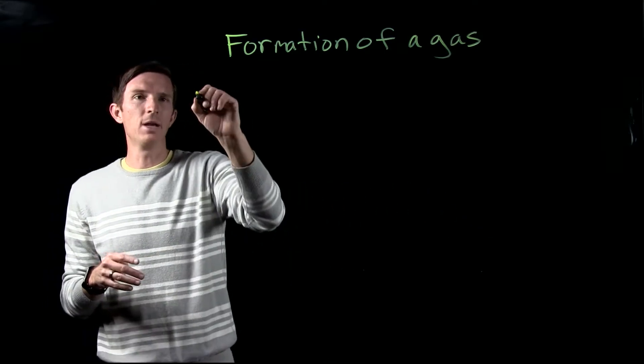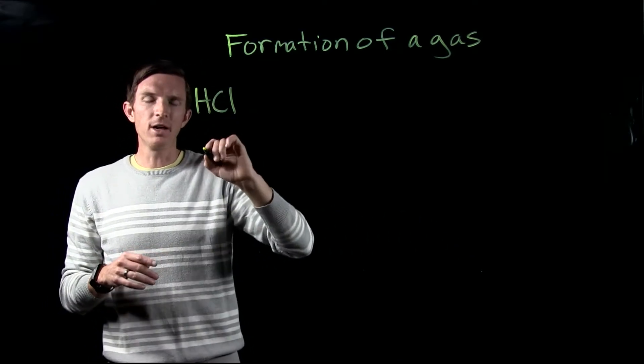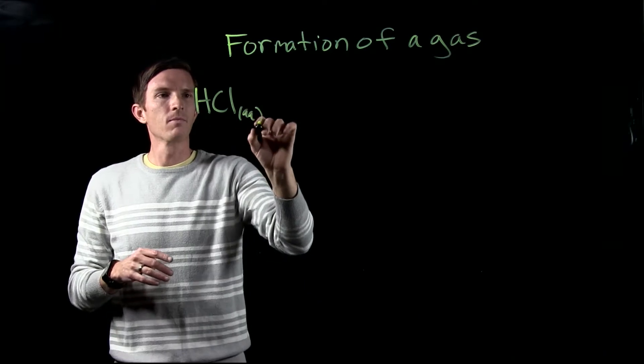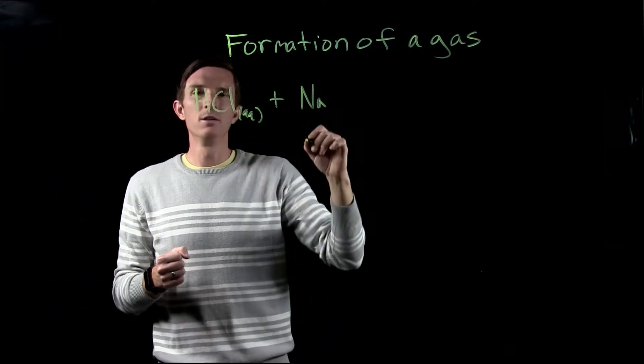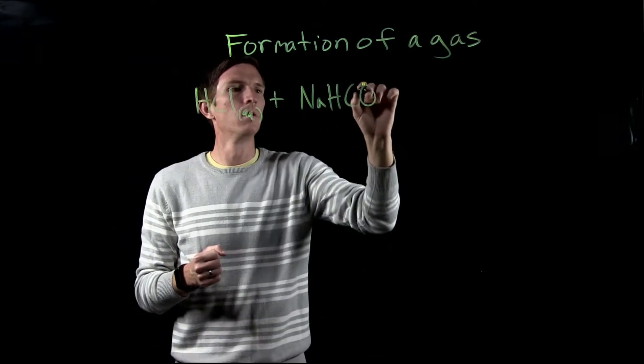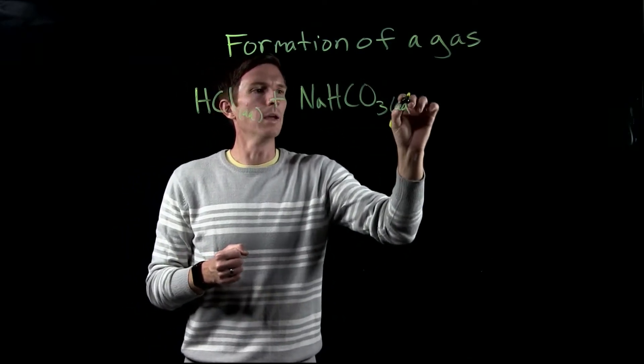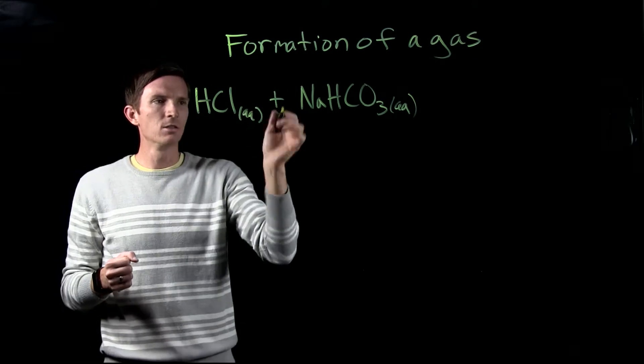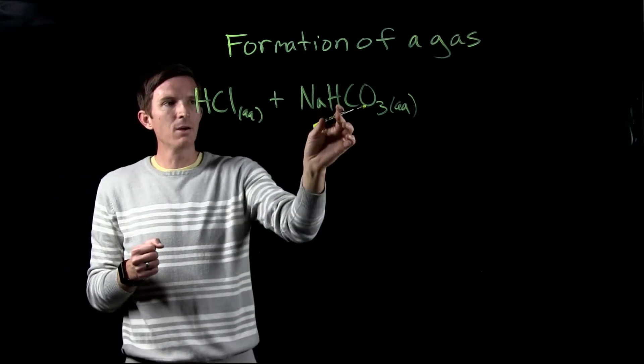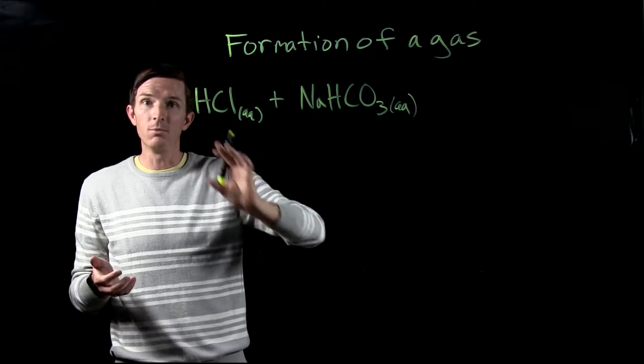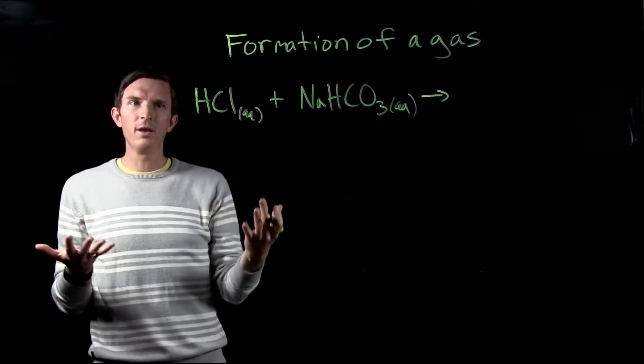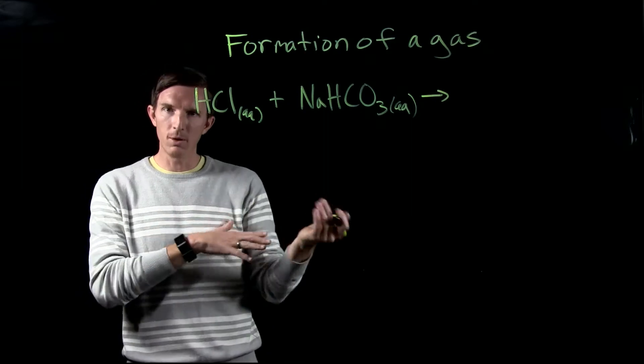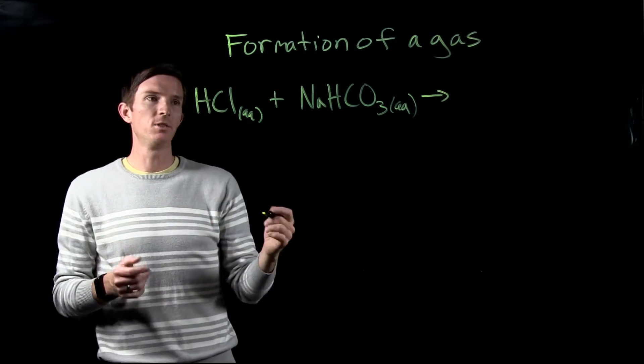So I'm going to look at a reaction where we have hydrochloric acid and maybe something like sodium bicarbonate. Now here we have something like baking soda and we're going to add an acid to it. Well again we have two ionic compounds and we're going to look at what would be the ions that are going to switch here.